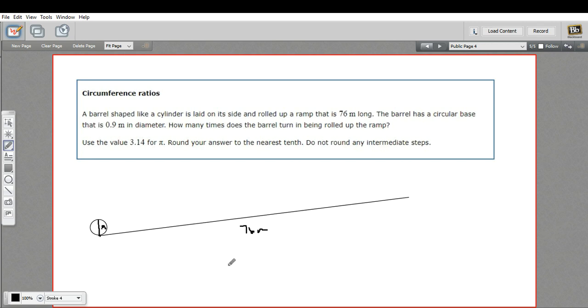So how many times does it roll? What does rolling once represent? If it started here and it rolled along until it turned all the way around, that would be one circumference. So every time you roll the barrel completely around, you're going all the way around the outside of the barrel. That's what circumference is. So basically, we're asking how many circumferences does it take to get up 76 meters worth of ramp?